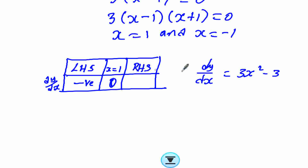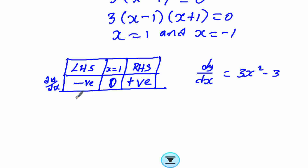On the right-hand side we take x equals 2: 2 squared is 4, times 3 is 12, minus 3 gives 9, so the sign is positive. We know that for a negative gradient the line slopes downward, for 0 the line is horizontal, and for a positive gradient the line slopes upward. This pattern — negative, zero, positive — tells us this is a minimum point.